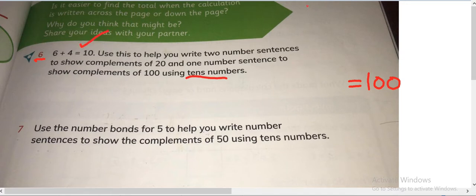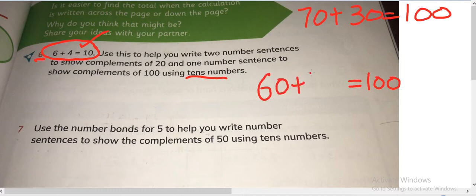And we need to use the same string. Or otherwise we can write 100 like 70 plus 30 is equals to 100, but here they said that we need to use this. So how will we make 100? We will make it as 60 plus 40 is 100. Okay, next question is use the number bonds for 5.